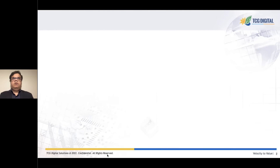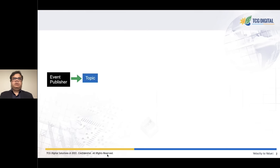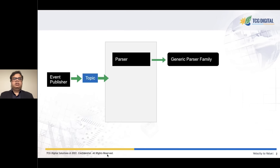Let us now walk through the event and data flow steps. It all starts with a message getting published onto a topic. The service orchestrator then picks up the message. The first step in the process is to parse the message.